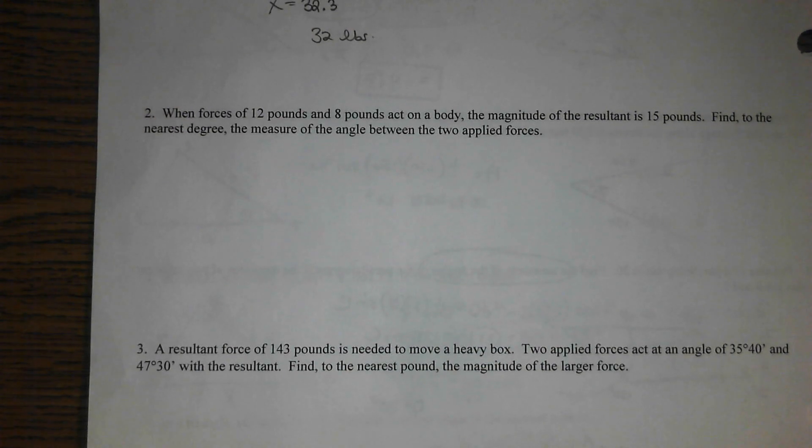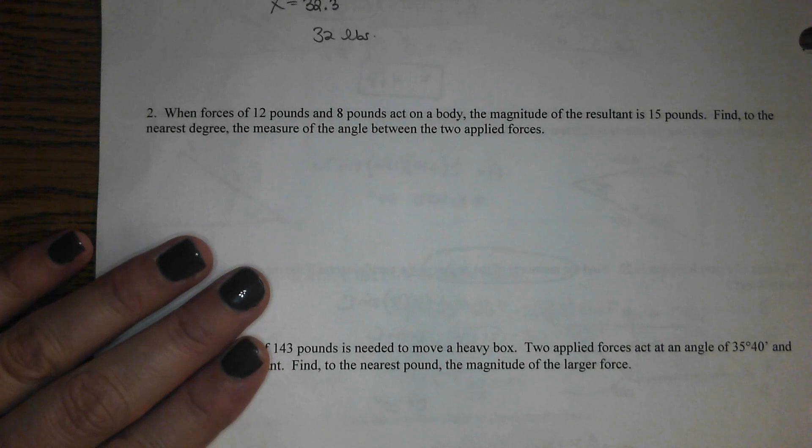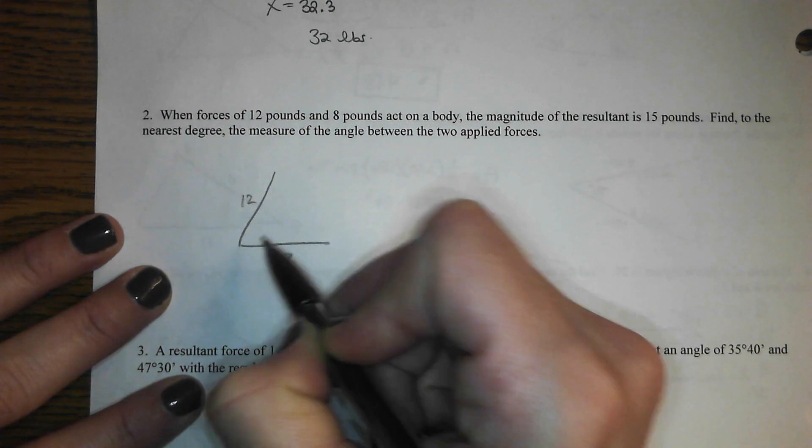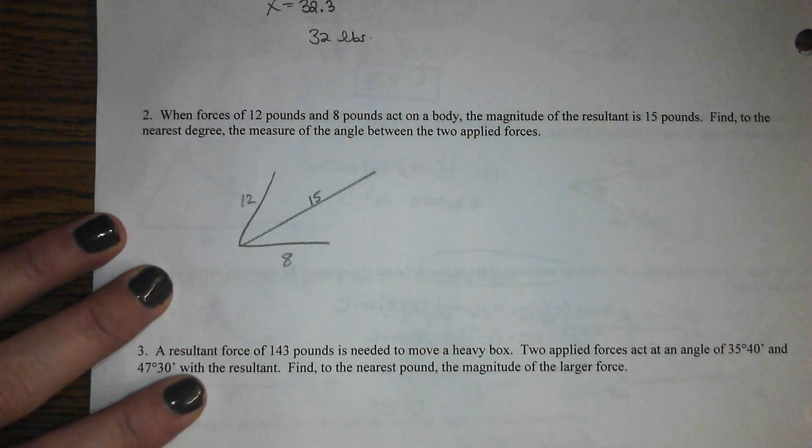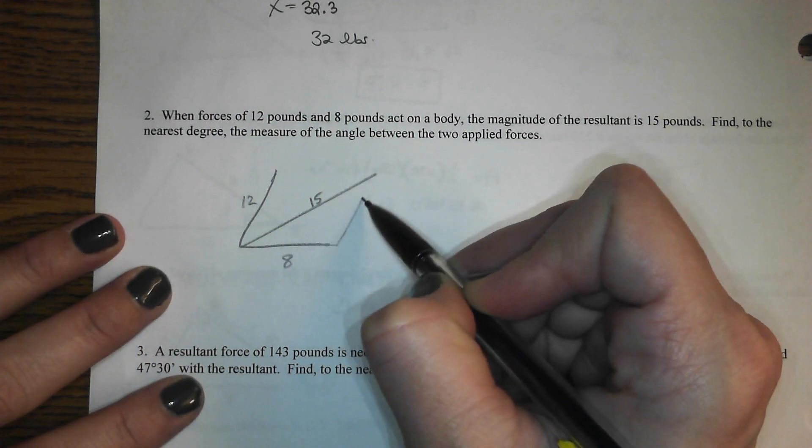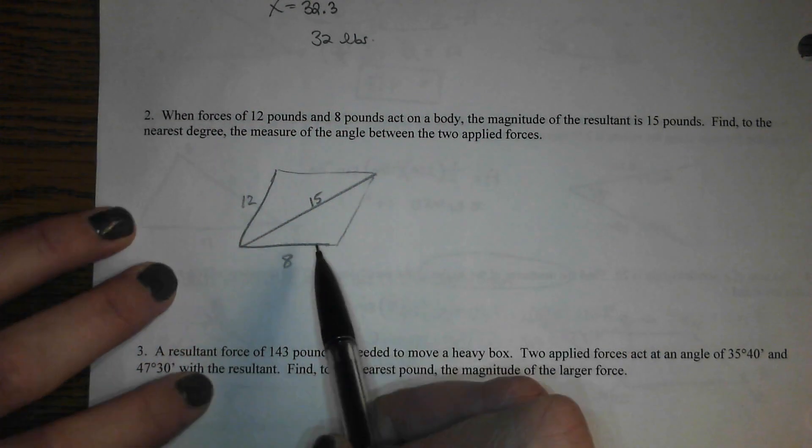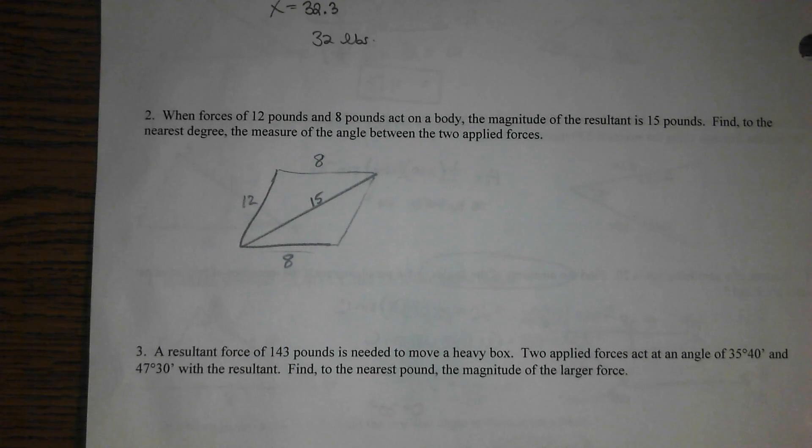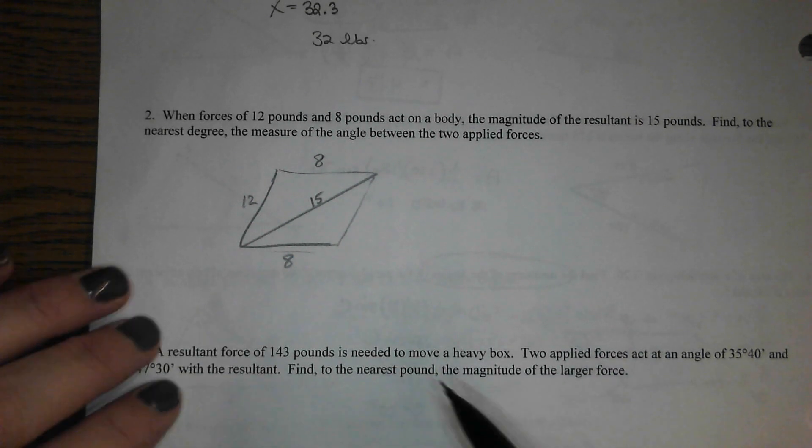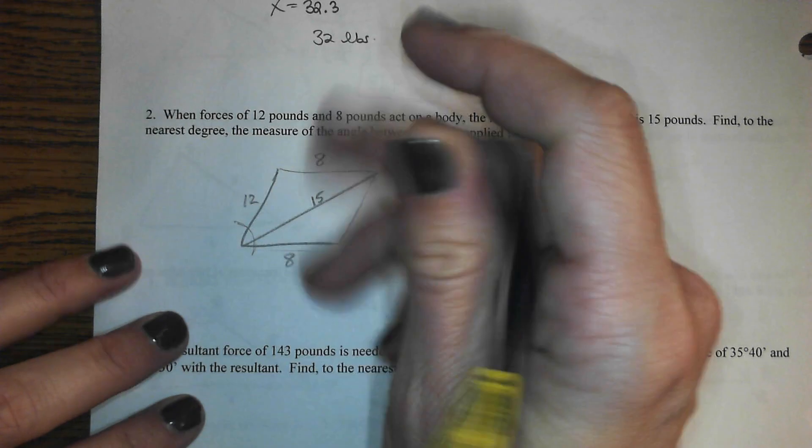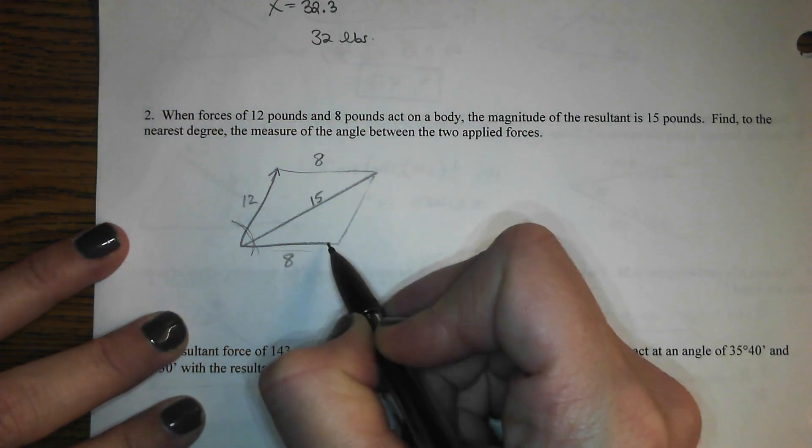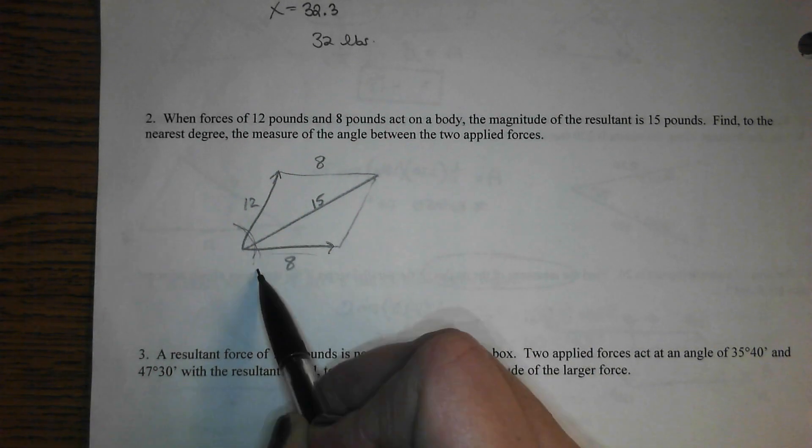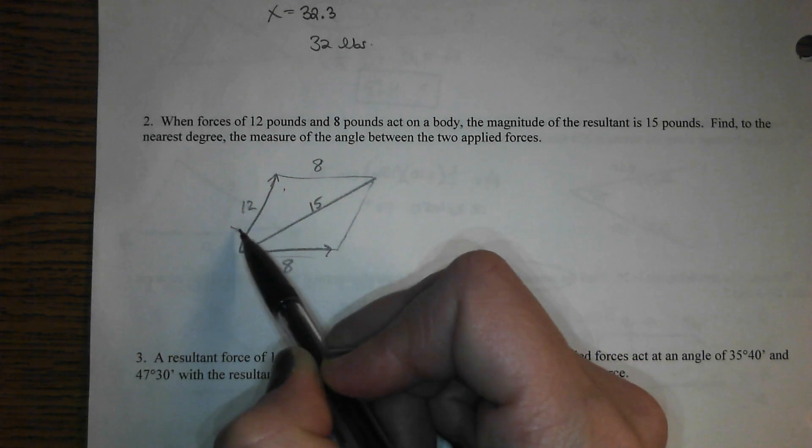We now need to draw our own diagram. Forces of 12 pounds and 8 pounds act on a body. The magnitude of the resultant is 15. So someone's pushing at 12, someone's pushing at 8, and the magnitude is 15. So we are actually given, now I don't care which way you go, you can make this one up here 8 to kind of complete that triangle. They now want us to go backwards and find the measure of the angle between the two applied forces, which would be this one. If 12 is going that way and 8 is going that way, we need to find that one. But based on the way the resultant goes, I'm not going to find that one directly. I'm going to find this one and then just take the supplement of it.